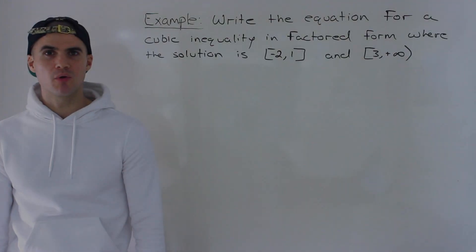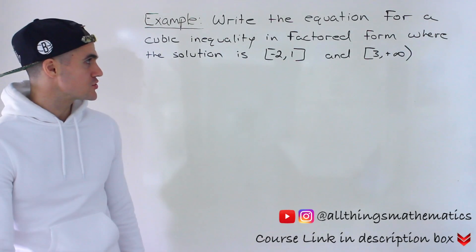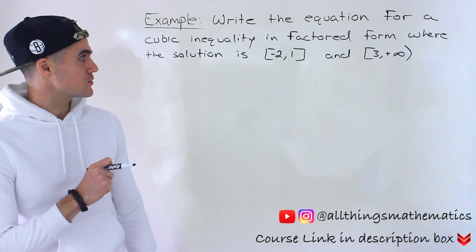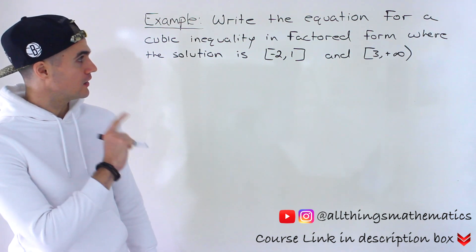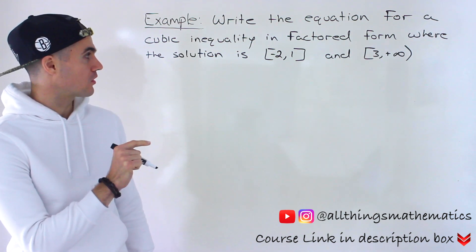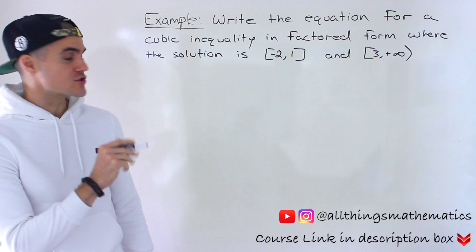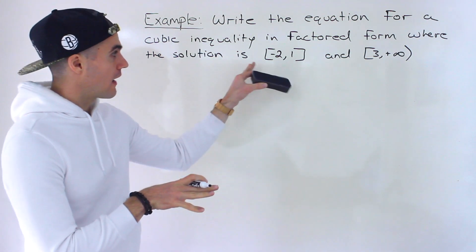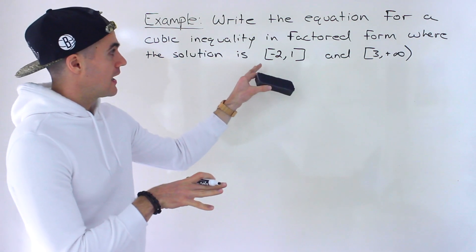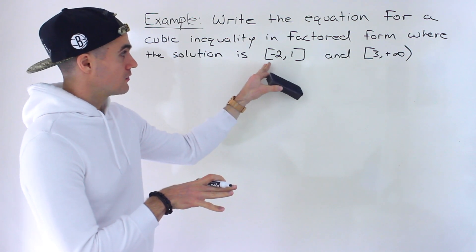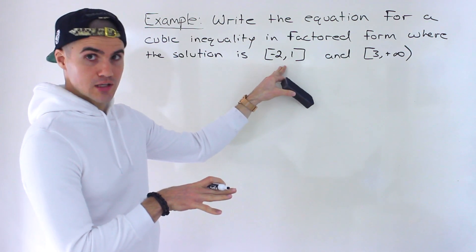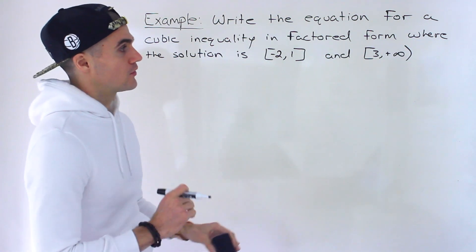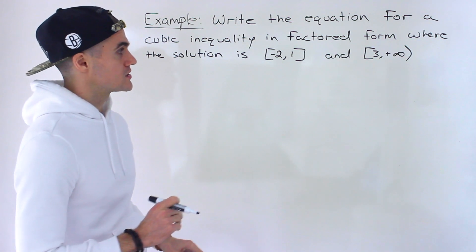Welcome back. Moving on to another question dealing with polynomial inequalities. We have to write the equation for a cubic inequality in factored form where the solution is x greater than or equal to negative two, less than or equal to positive one, and greater than or equal to three.